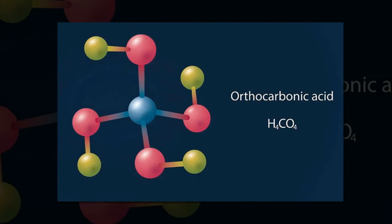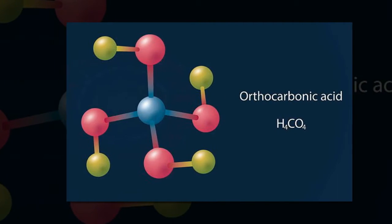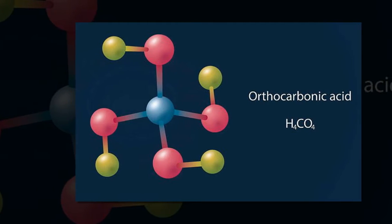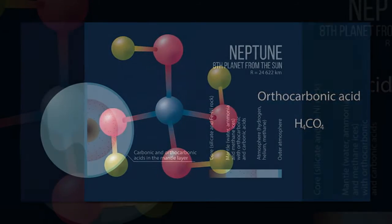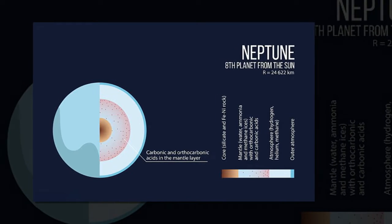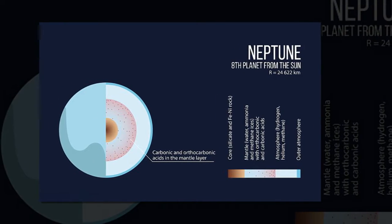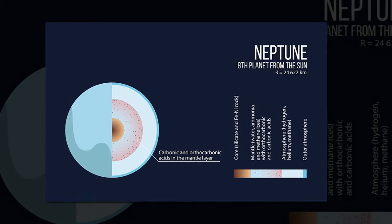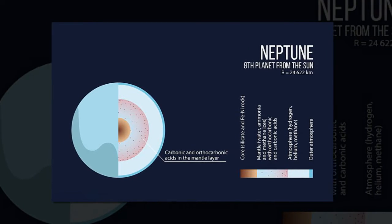Instead it forms heavier hydrocarbons, and at pressures above 400 GPa, 4 million times the Earth's atmosphere, several new substances began to form. These include an unusual clathrate, a lattice of hydrogen and methane that is capable of trapping other compounds within it.